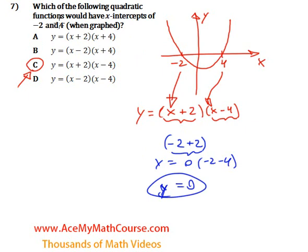And if we were to plug in the 4, that would also work. Because 4 minus 4 is 0, and 0 times anything is 0. So there we go. The answer is C.